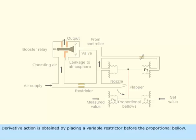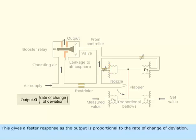Derivative action is obtained by placing a variable restrictor before the proportional bellow. This gives a faster response as the output is proportional to the rate of change of deviation. Derivative action has a stabilizing effect on the system and reduces overshoot.